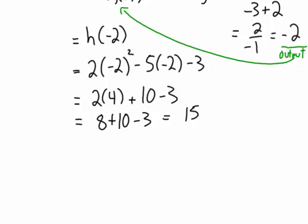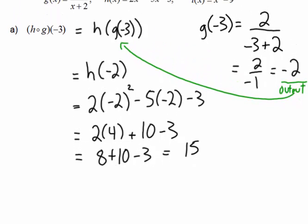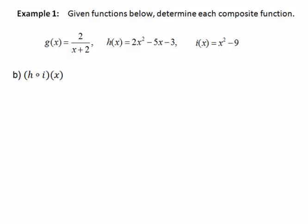15 is our solution to the original composite function. We can do composite functions with numbers or with variables. For h of i of x, we take the function h and replace every x with i of x. Everywhere there's an x, we replace it with x squared minus 9.